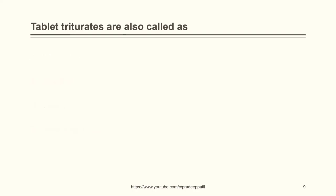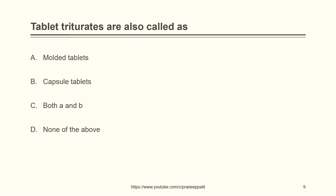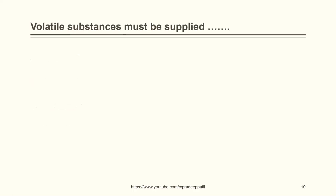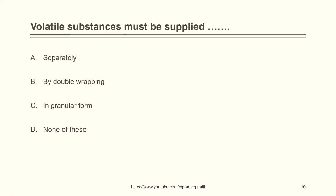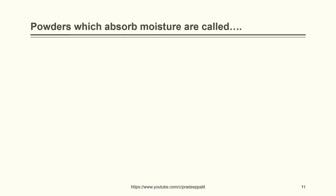Tablet triturates are also called as: molded tablets, capsule tablets, both A and B, or none of the above. The correct answer is molded tablets. Volatile substances must be supplied separately by: double wrapping, in granular form, or none of these. The correct answer is by double wrapping. Powders which absorb moisture are called: hygroscopic, eutectic, volatile, or none of these. The correct answer is hygroscopic.